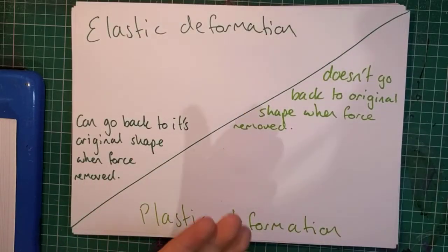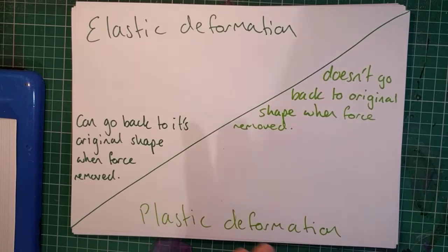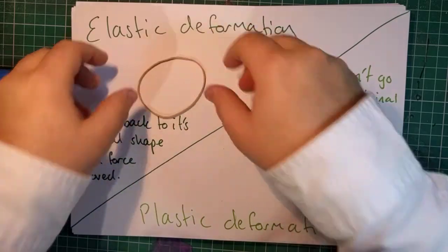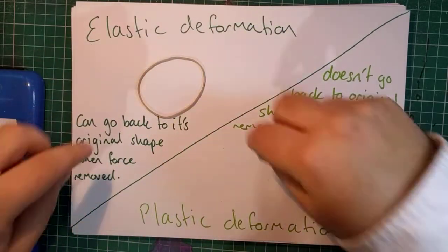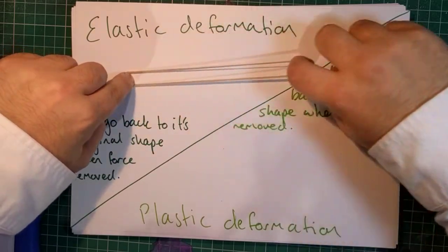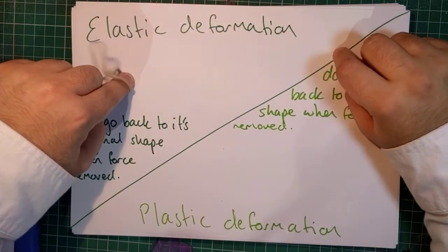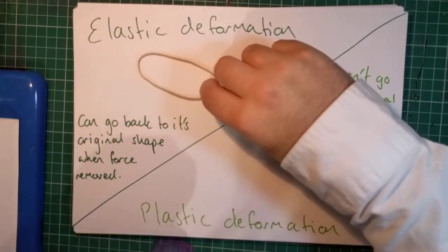Now there are two types of change of shape. Remember we said deformation means a change in shape. There's elastic and plastic. An example of an elastic deformation would be this elastic band here, aptly named because of the way it deforms. If I was to stretch this elastic band and then release it, it goes back to the original shape.